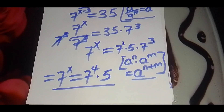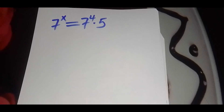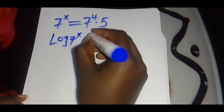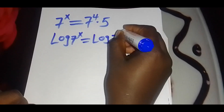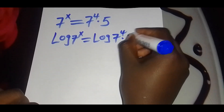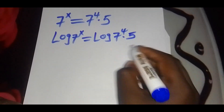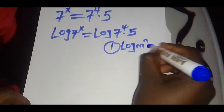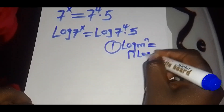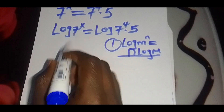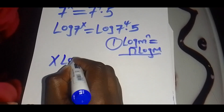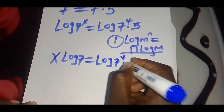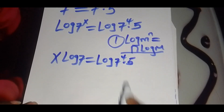Let's solve for x by introducing the natural logarithm, so that we have log of 7 raised to x equals log of 7 raised to 4 multiplied by 5. Applying the power rule — log of m raised to n equals n times log of m — we get x log 7 equals log of 7 raised to 4 multiplied by 5.